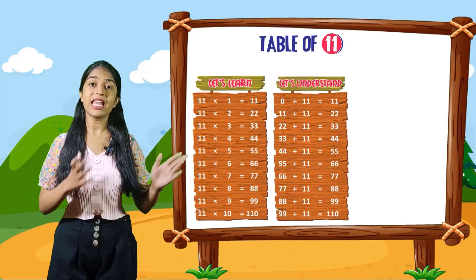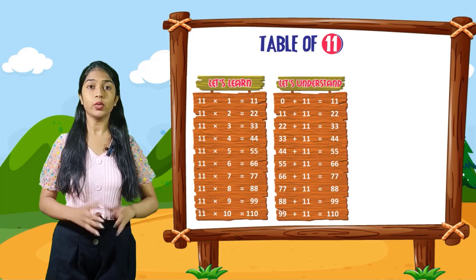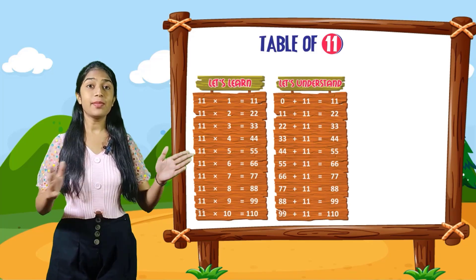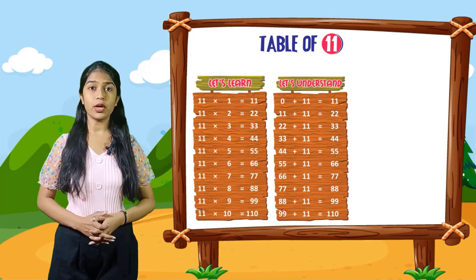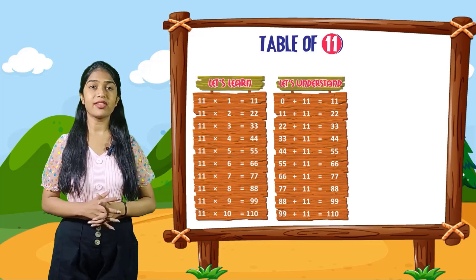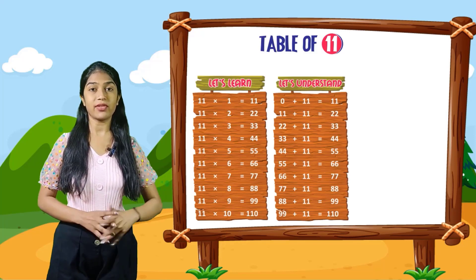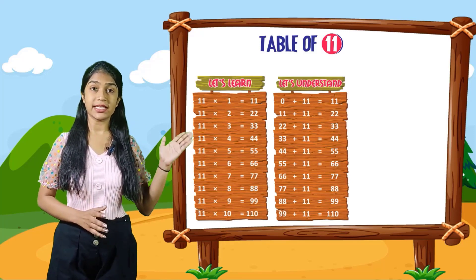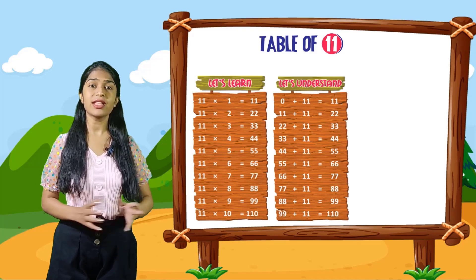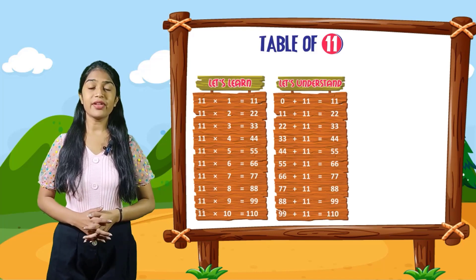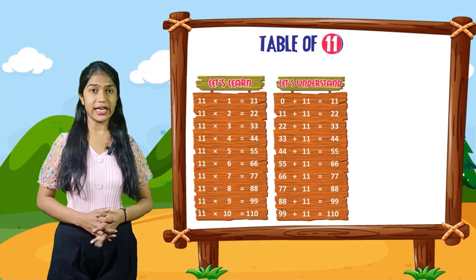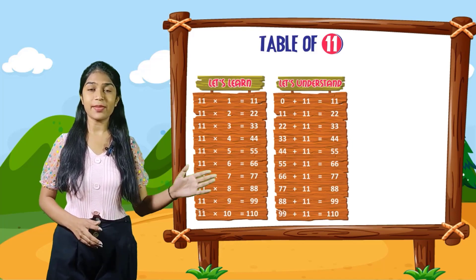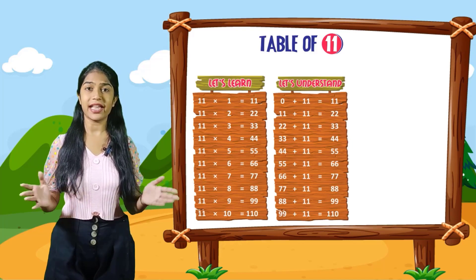So let's understand. 0 plus 11 is equal to 11. 11 plus 11 is equal to 22. 22 plus 11 is equal to 33. 33 plus 11 is equal to 44. 44 plus 11 is equal to 55. 55 plus 11 is equal to 66. 66 plus 11 is equal to 77. 77 plus 11 is equal to 88. 88 plus 11 is equal to 99. 99 plus 11 is equal to 110.